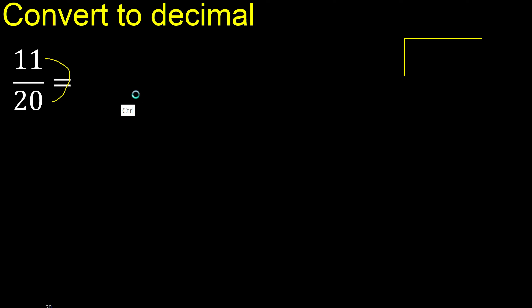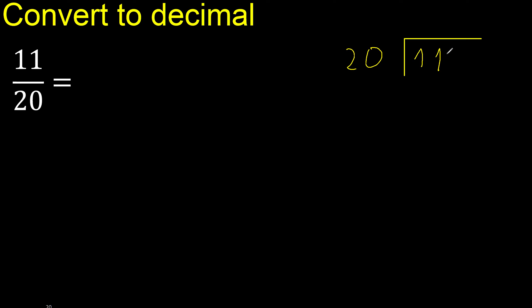11 divided by 20. 11 is less, therefore complete — always complete with 0. Now with 0, the point is not less — we have 110.